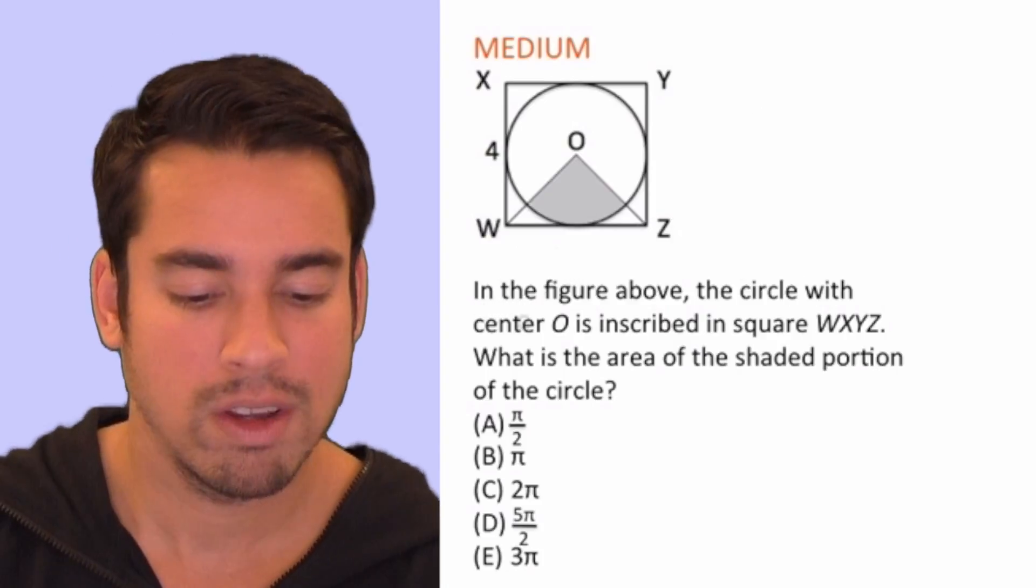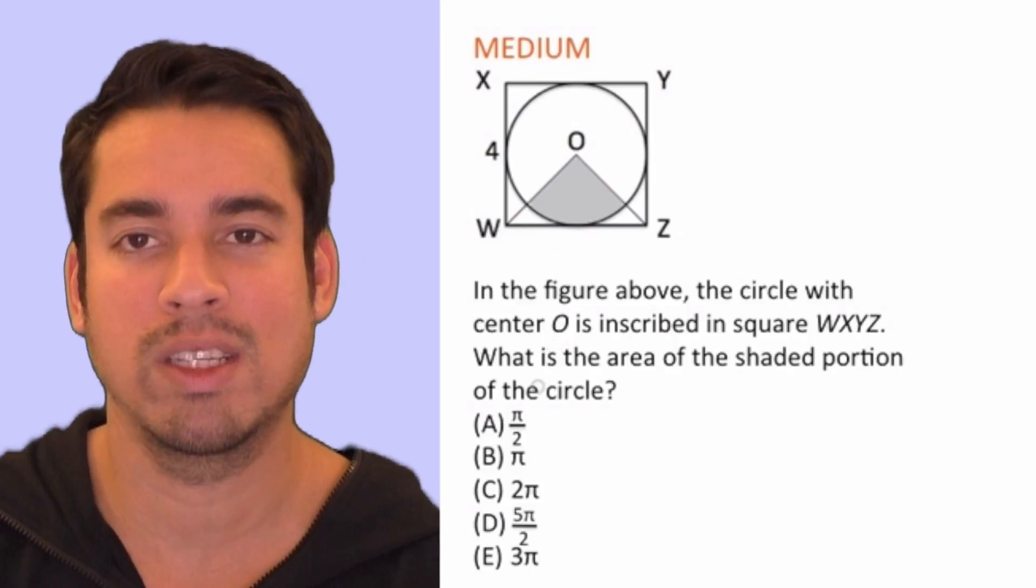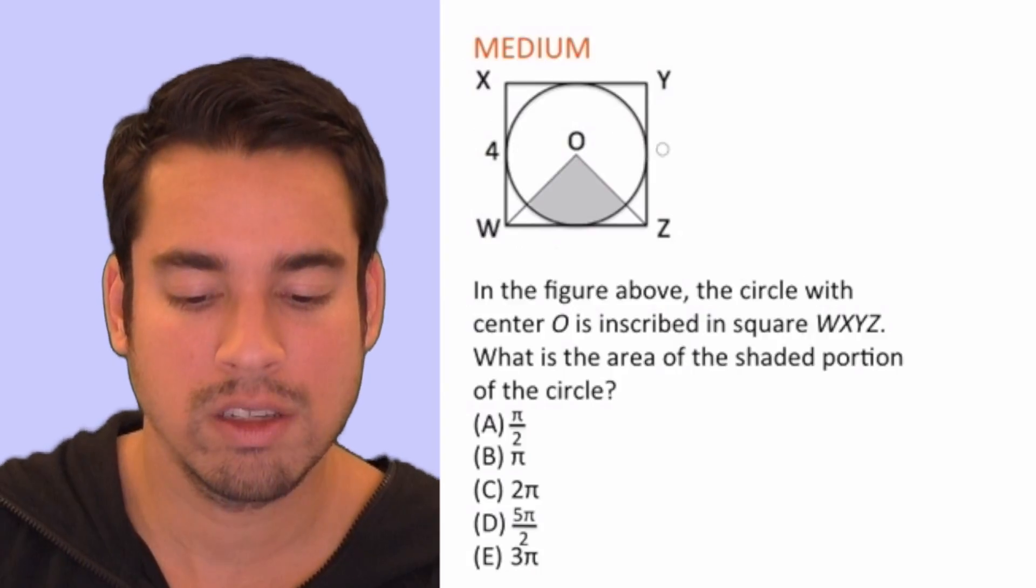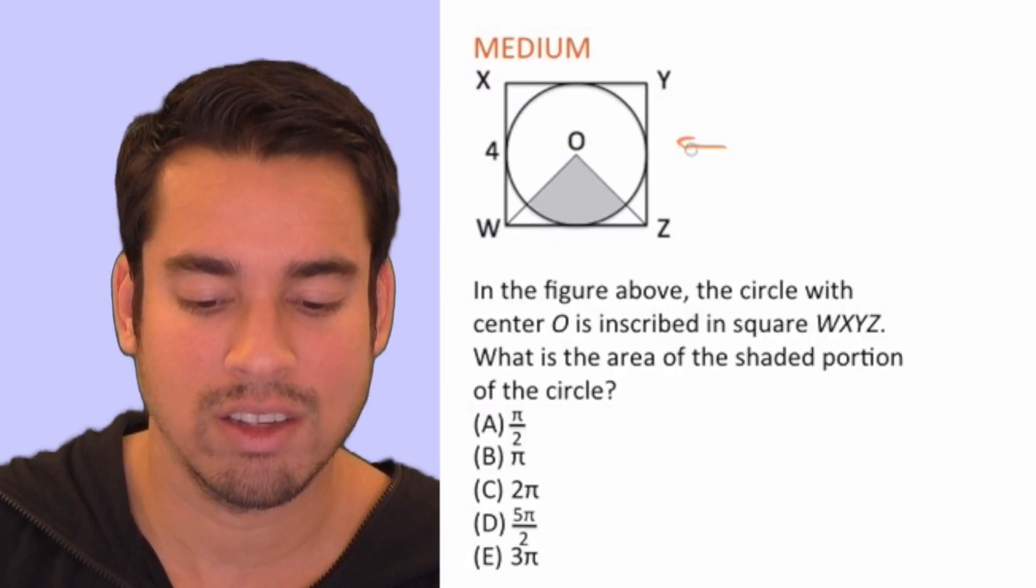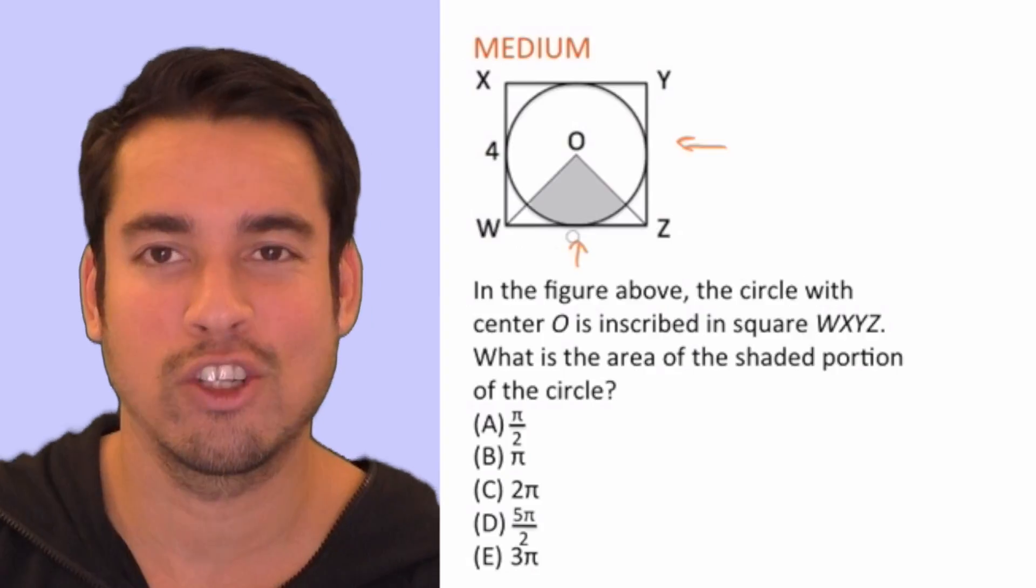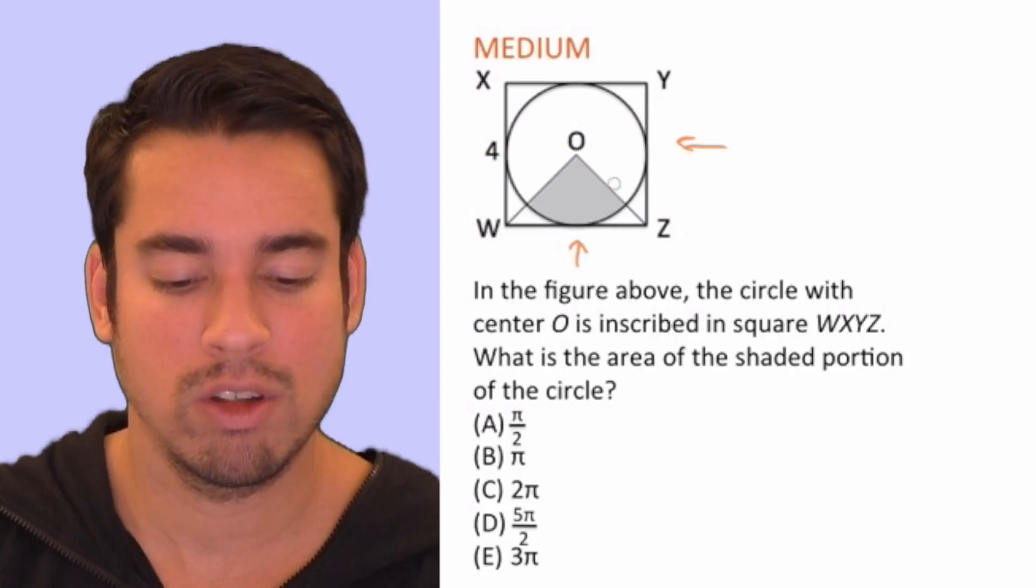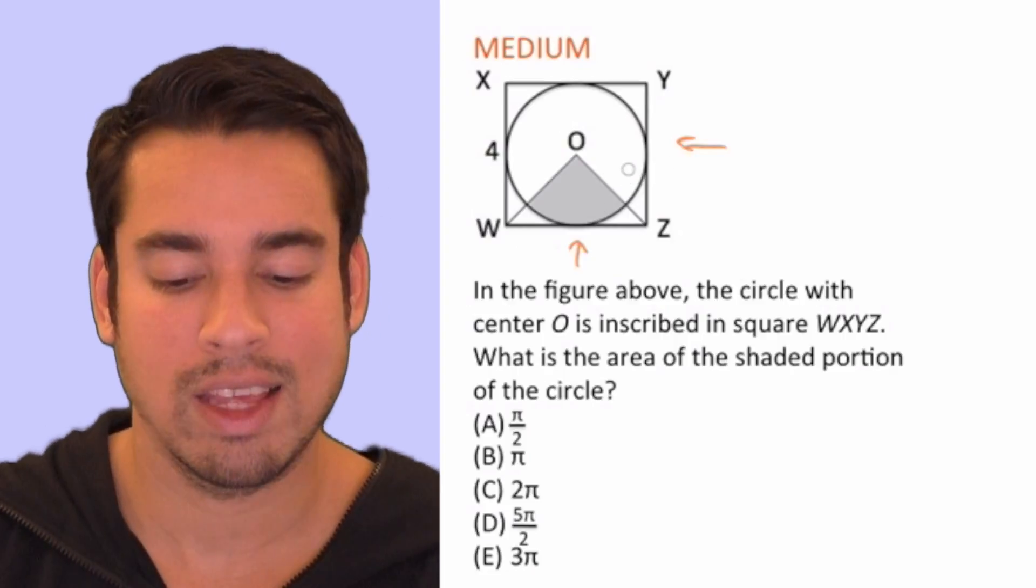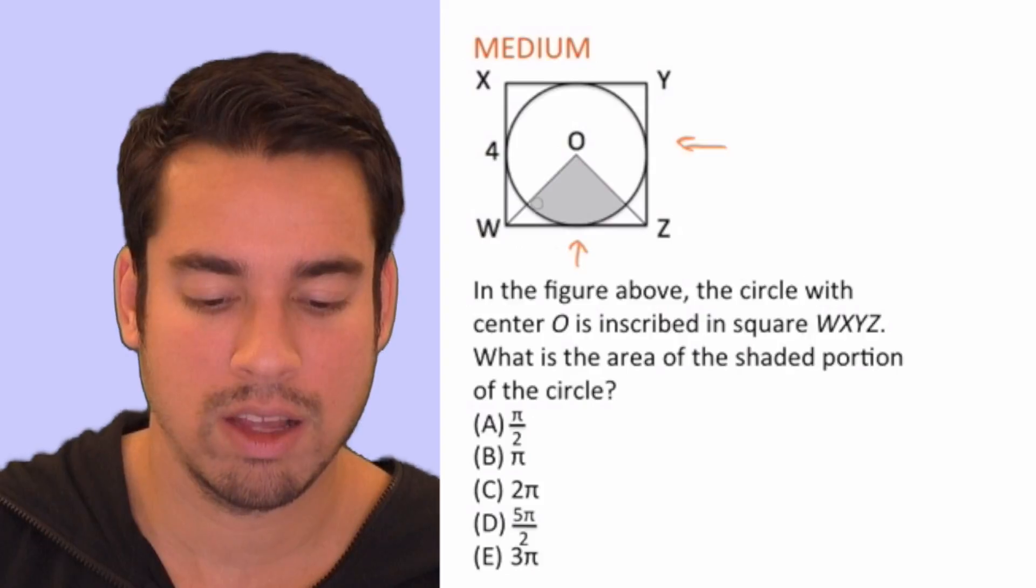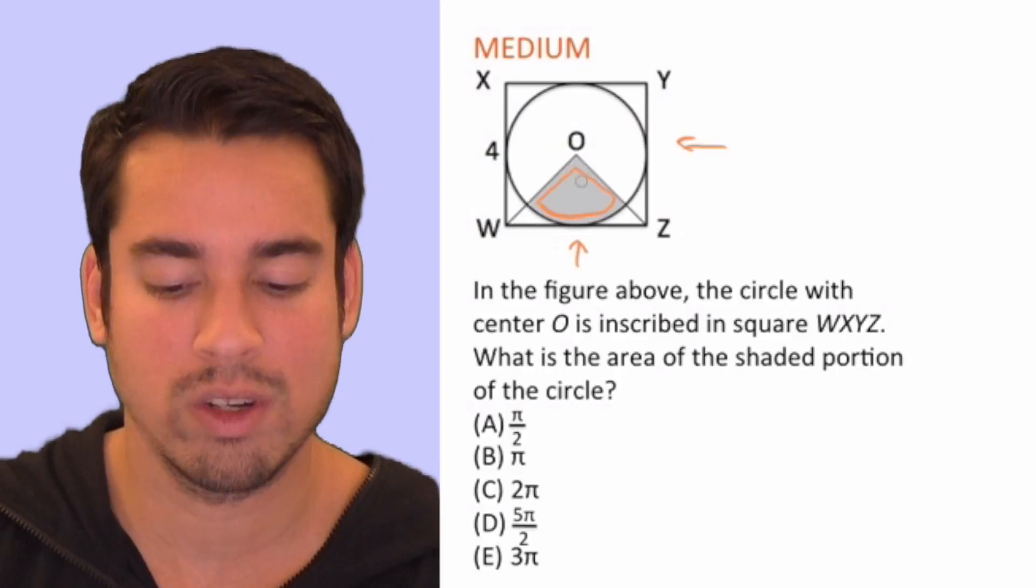Let's see what the question is asking. So it says in the figure above the circle with center O is inscribed in square WXYZ. So when it's inscribed inside it just means it's inside of it. And you can make another assumption. You can make an assumption that at each point where it's touching the square, like here up at the down here and so on and so forth, that is it's tangent to the square meaning it's literally just one point. It's touching that square. It says what is the area of the shaded portion of the circle. So it's that gray area, like all this whole section in here. So we want to know this shaded portion, what is the area?